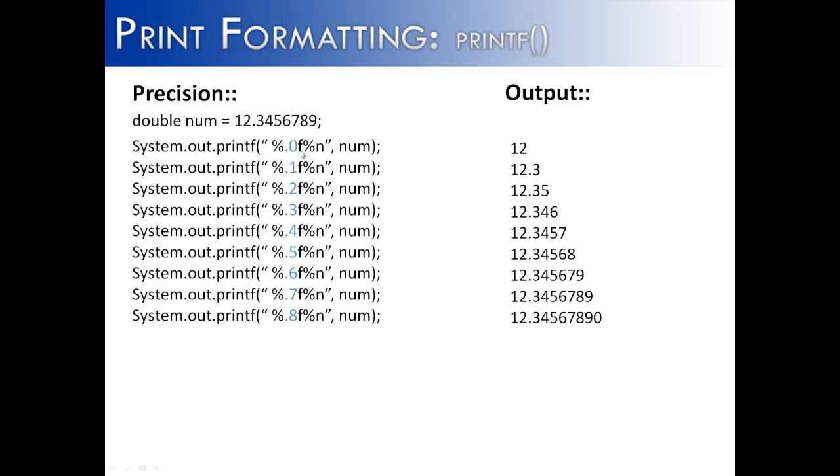You can see with .0, that means I want no decimal place. It just drops the decimal place and gives you the integer in front of the decimal separator. Next we have one decimal place, two decimal places, three decimal places.